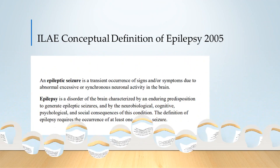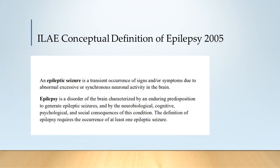If we go back to the initial conceptual definition that they provided in 2005, they said the following. An epileptic seizure is a transient occurrence of signs and/or symptoms due to abnormal, excessive or synchronous neuronal activity in the brain. Simply put, that is a way of describing an epileptic seizure as being an event.